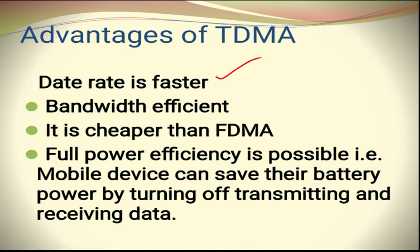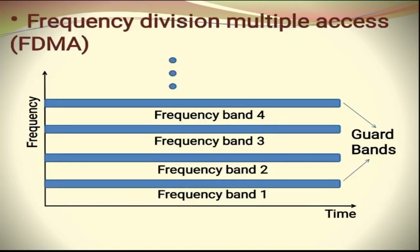The last advantage of TDMA is full power efficiency — the mobile device can save battery power by turning off transmitting and receiving when not in use. TDMA technology was used in first-generation mobile systems where mobiles not making communication could shut down their transmitting antennas. TDMA is also used in military applications such as walkie-talkies.